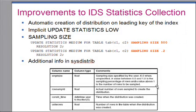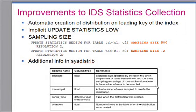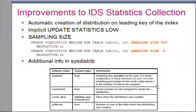The constructed_time column is a DATETIME YEAR TO FRACTION(5) type that saves the actual date and time the distribution was created. Note that SYSDISTRIB already has a column called constructed_date, but the date alone is insufficient if you have a system where you collect statistics multiple times within a 24-hour period. The last column added to SYSDISTRIB is nrows, which saves the number of rows in the table when the distribution was created, giving you a sense of the state of the table at that time versus its current state.